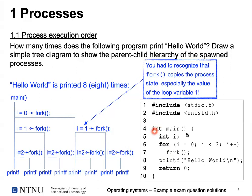We start with one single program that has a main function. This function uses a loop iterating three times — zero, one, two — and in each iteration fork is called. What you needed to know is that when you do a fork, the state of all variables is copied using copy-on-write, and then when you make changes you have separate copies. So when you go through the loop for the first time at i equals zero, you create one additional process with fork, and then both processes continue in the loop with i equals one.